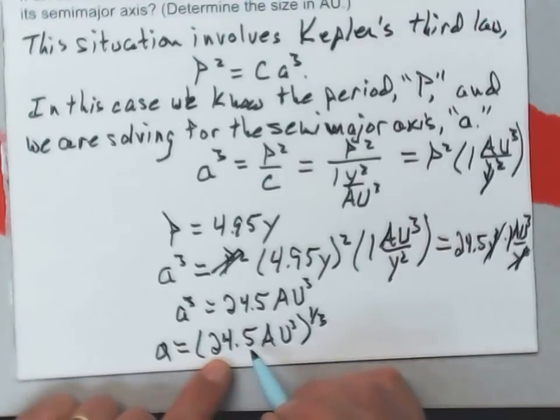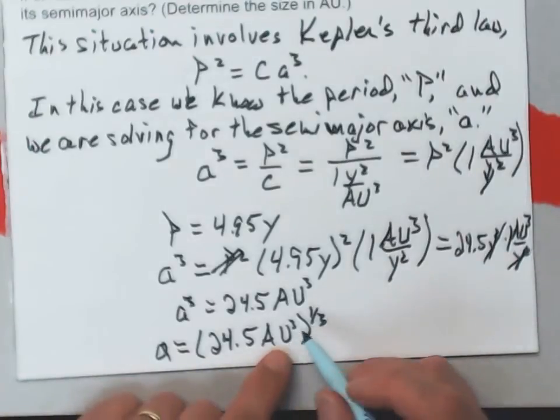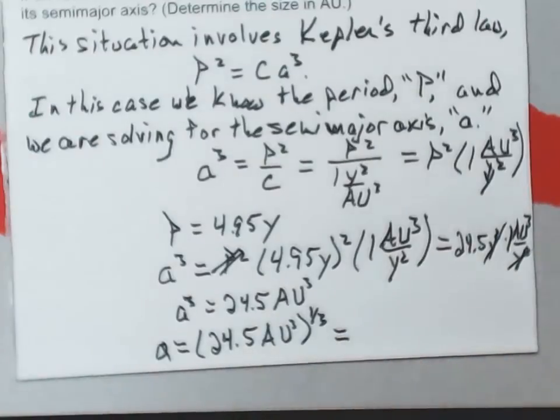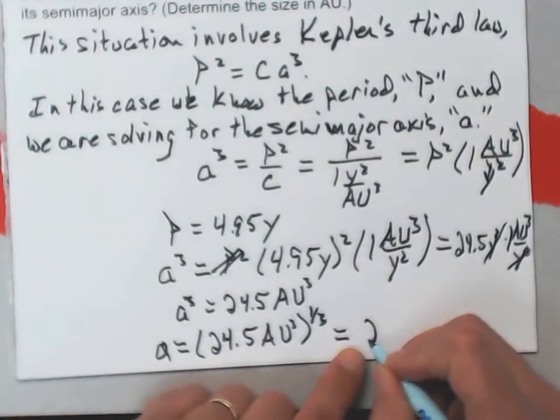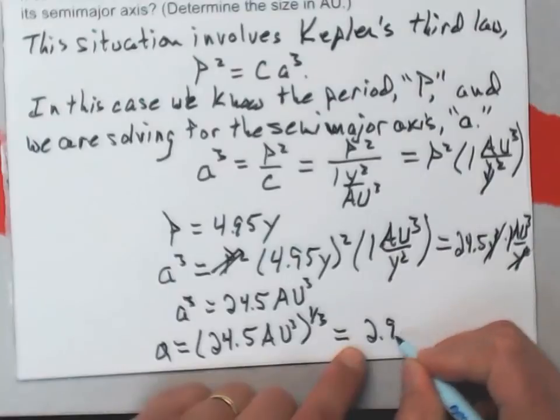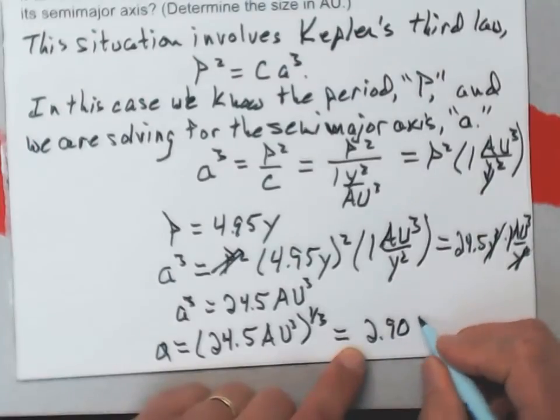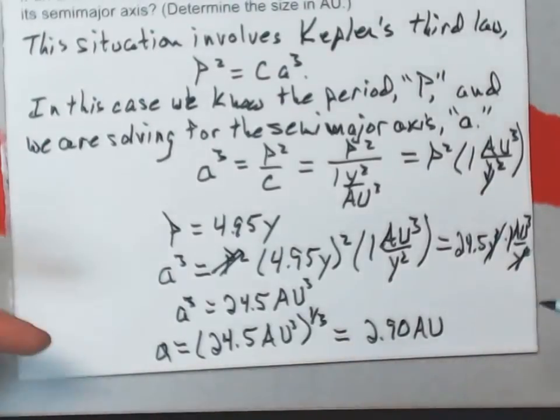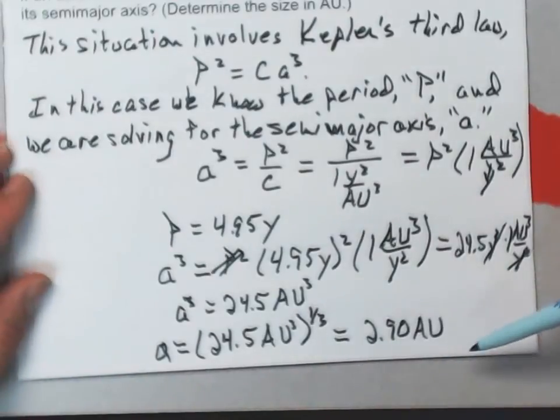Here I take the 24.5 to the 1/3, which on my calculator I can do pretty easily. When I take AU cubed to the 1/3, I just get AU, and I get 2.90 AU for the semi-major axis of that thing.